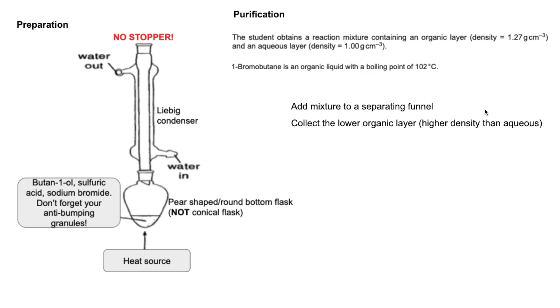Once you've collected the organic layer, you need to add a drying agent to remove any small traces of water. The one I always use is anhydrous magnesium sulfate, or you could go for anhydrous calcium chloride. Then once you've got rid of that last bit of water, you re-distill and collect the fraction that comes off at 102 degrees C.